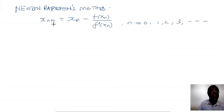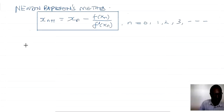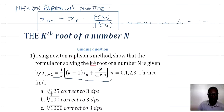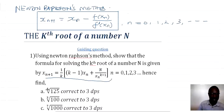And we have got to use this to find the kth root of any number n. Let us have a guiding question here. The kth root of a number n — using Newton-Raphson's method, show that the formula for solving the kth root of a number n is given by. So we have to show this, and later on we shall use this formula to find part (a): the 6th root of 125 correct to three decimal places.